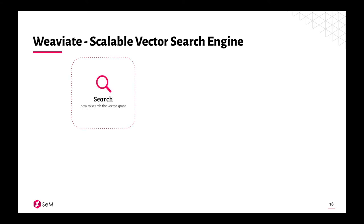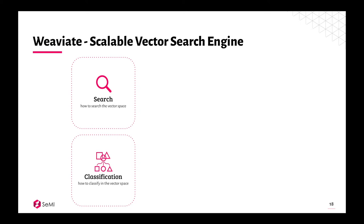Weaviate has two core features. The first is search, or as we like to say, search and discovery in your data — the demo focuses on how to find things using Weaviate. The second is classification: Weaviate can automatically make relations in your data sets. Where search requires some form of human or machine input to get to insights, with classification you can ask Weaviate to do that automatically.